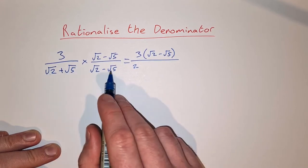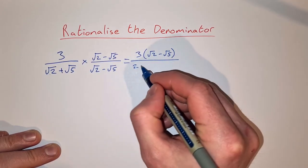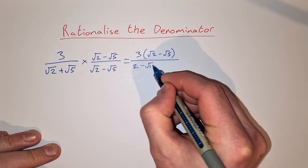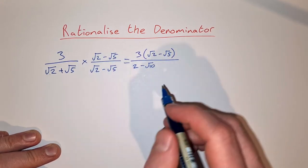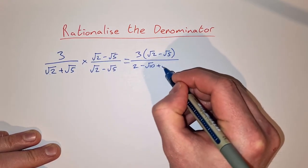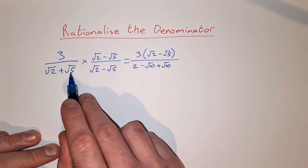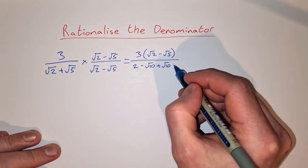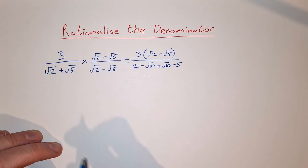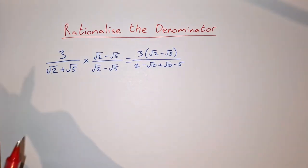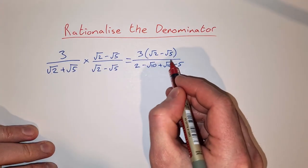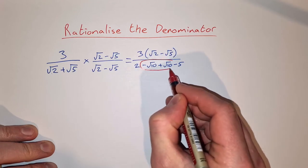It's root 2 by minus root 5, that's minus root 10. Root 5 by root 2 is plus root 10, and root 5 by minus root 5 is minus 5. And what you should notice is that anything with a square root sign on the bottom cancels out.